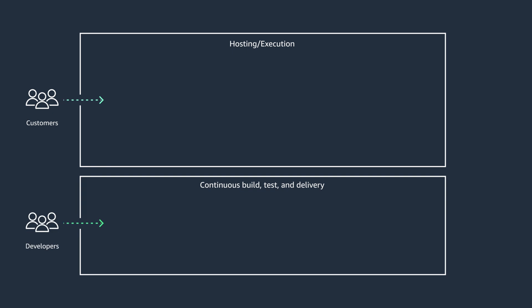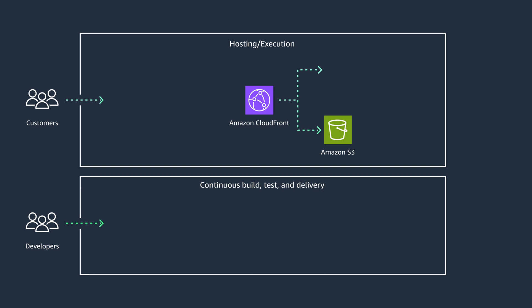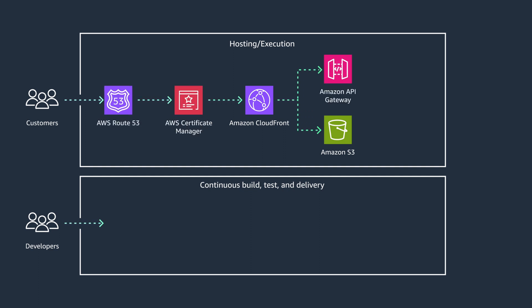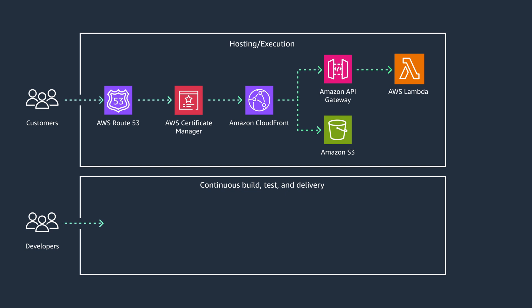Let's take a look at the components required for running a server-side rendered web application on AWS, separating architectural pieces needed for hosting and execution from those needed for building and deploying code. You always start with a customer. The front-end web application and its assets could live in an S3 bucket. To make the website faster, you add a content delivery network like Amazon CloudFront to ensure fast global delivery and cache contents when needed. To make it marketable and secure, you manage DNS and SSL certificates through services like Amazon Route 53 and AWS Certificate Manager. Then you need to manage APIs and a server-side compute layer through services like AWS Lambda to fetch data from databases, content management systems, and third-party APIs, and compile the data into static HTML.